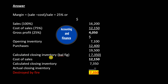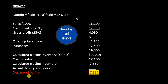Calculated closing inventory — balance figure — minus $7,350. Cost of sales $12,150. Calculated closing inventory $7,350. Actual closing inventory $0. Destroyed by fire: $7,350.